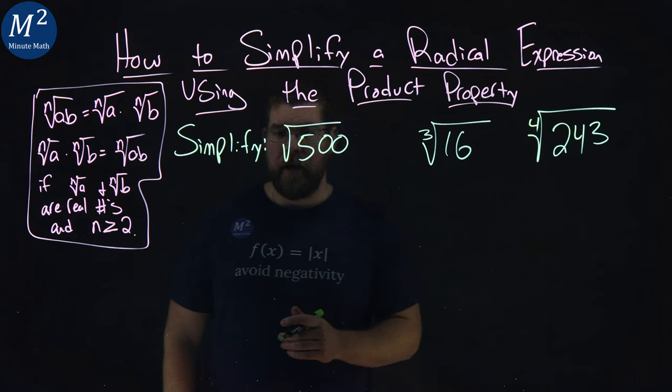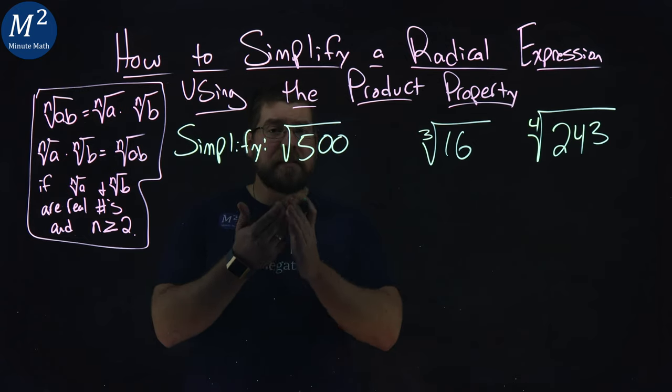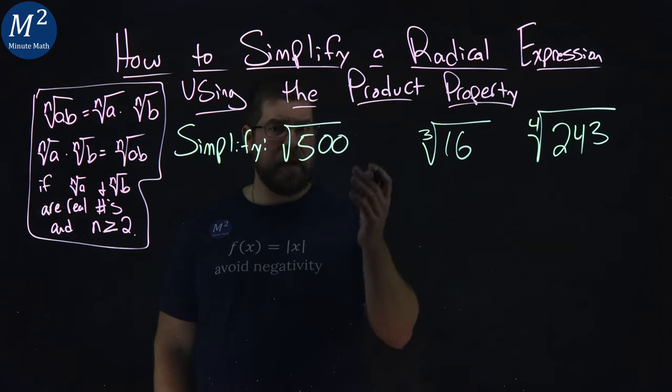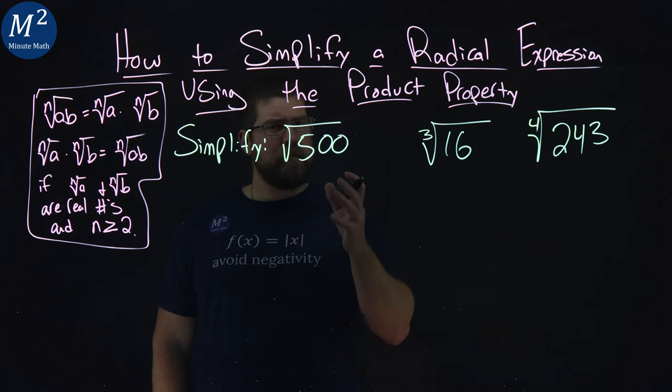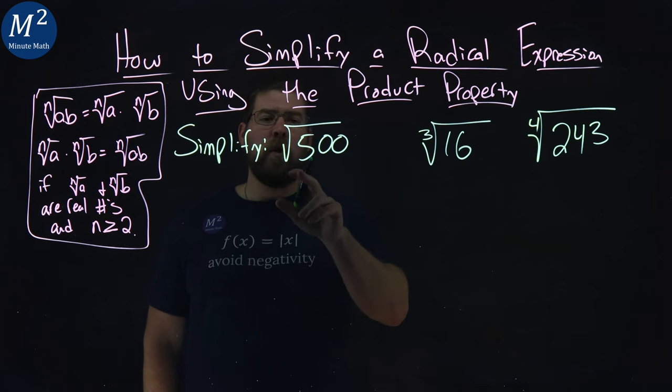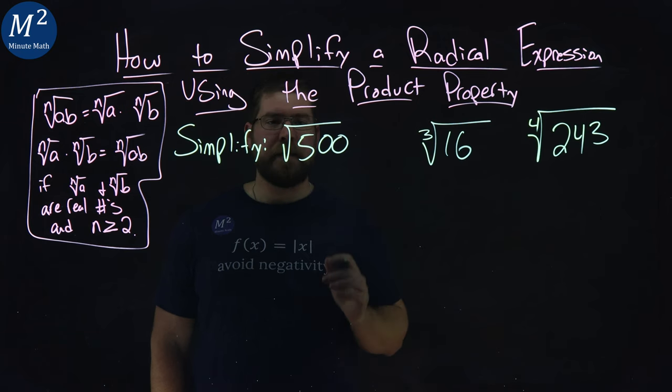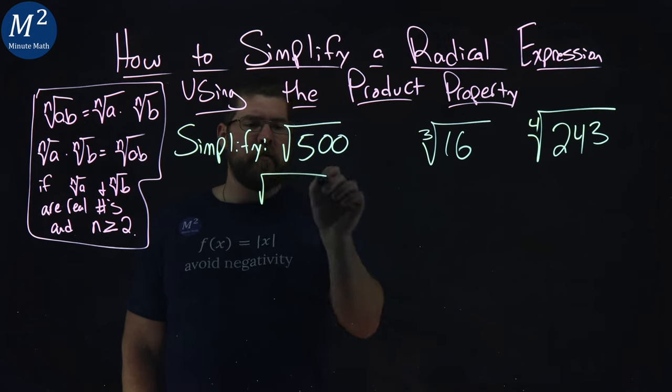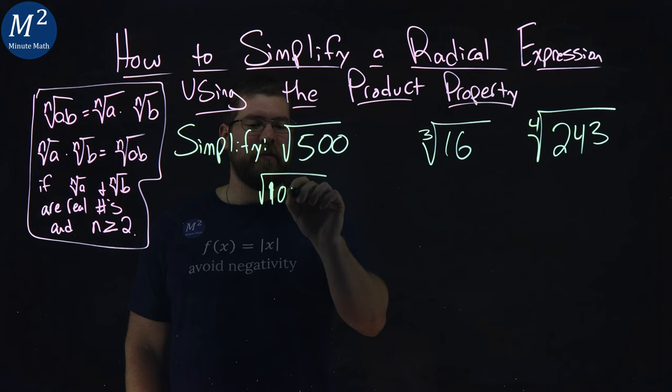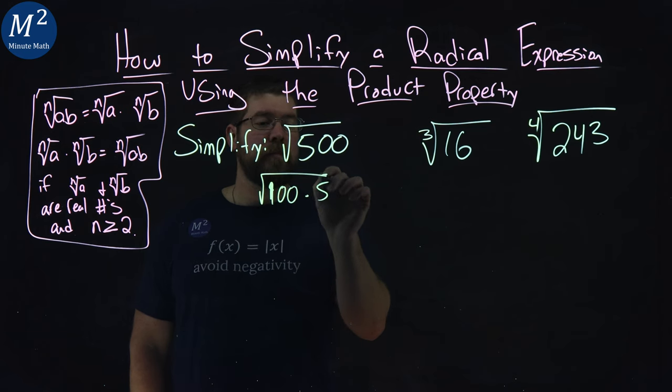Let's start with 500. The product property says we can separate the inside to be multiplication. If we want to do that, we're planning ahead. We know we have to take the square root of a number, so we want to see what's a perfect square that we can deal with. 500 is 100 times 5. Pretty easy.